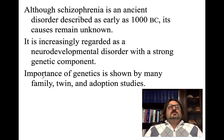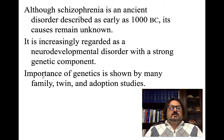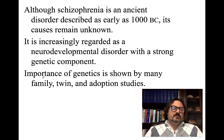The EEG of a healthy person shows localized stimulus-induced electrical activity in a specific area of the brain depending on the stimulus, whereas persons with schizophrenia respond to specific stimuli with widespread electrical activity across large portions of the brain. Although schizophrenia is an ancient disorder described as early as 1000 BC, its causes remain unknown. It is increasingly regarded as a neurodevelopmental disorder with a strong genetic component.